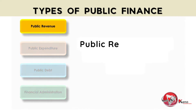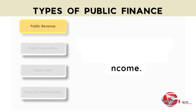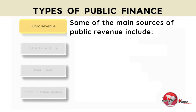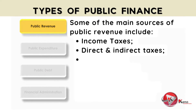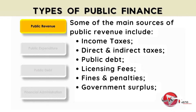Let's start with public revenue, which essentially deals with the government's income. Some of the main sources of public revenue include: income taxes, direct and indirect taxes, public debt, licensing fees, fines and penalties, government surplus, as well as grants and donations.